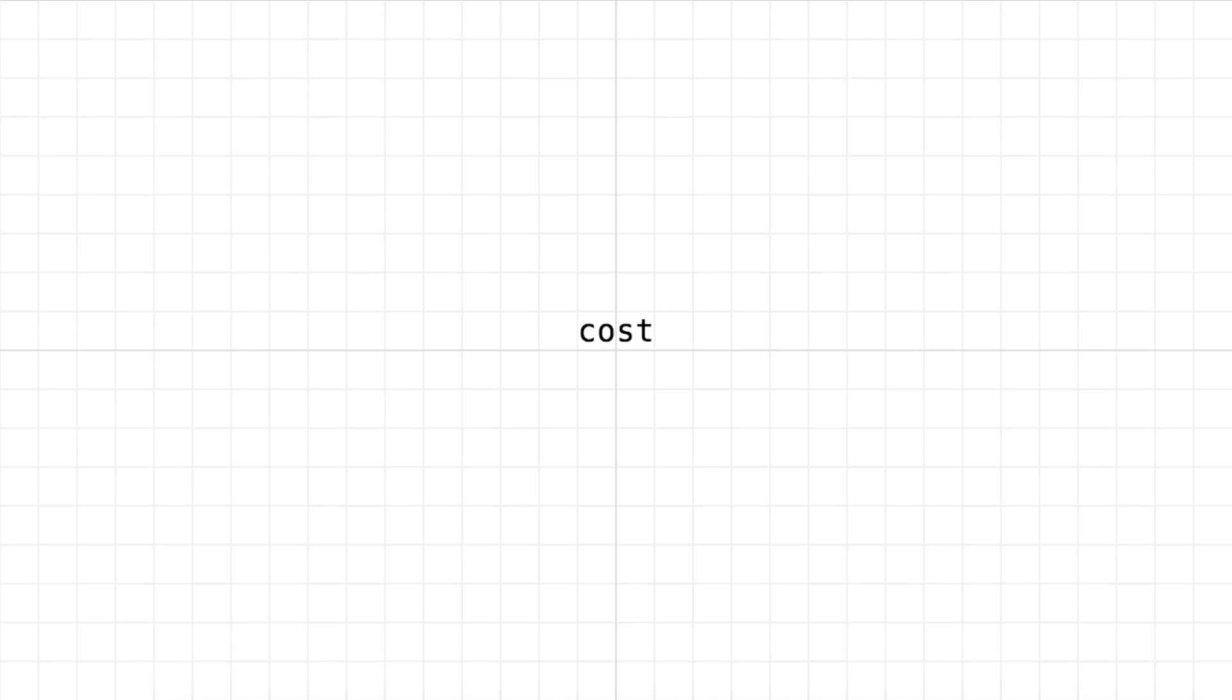The cost function, as its name implies, is a function. It takes in our farmer's data and predictions our neural network has made on that data, and it spits out a single number.